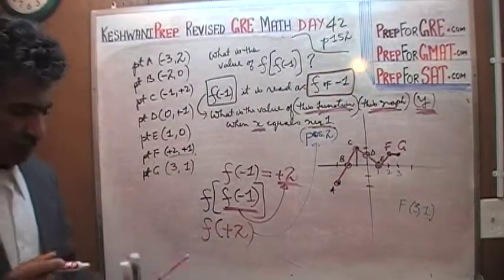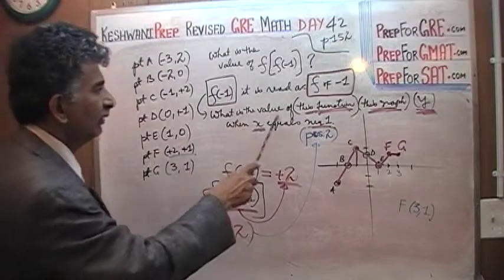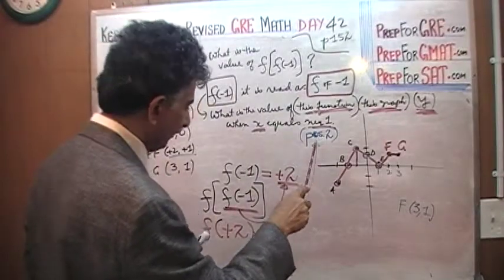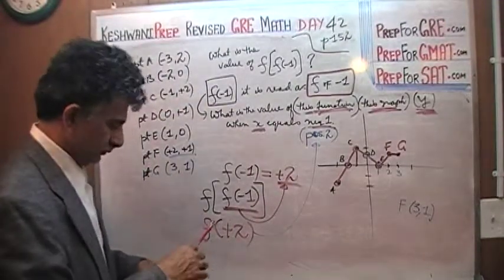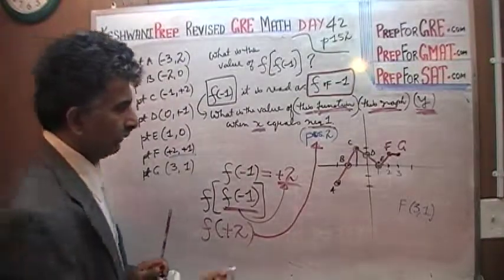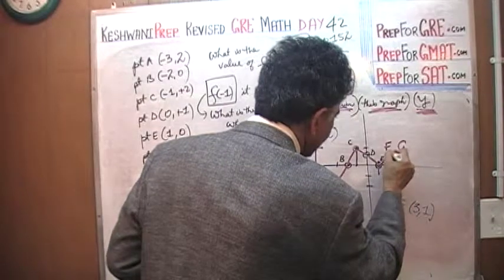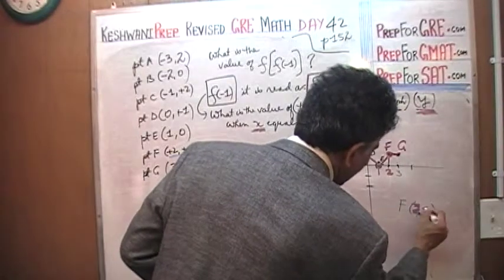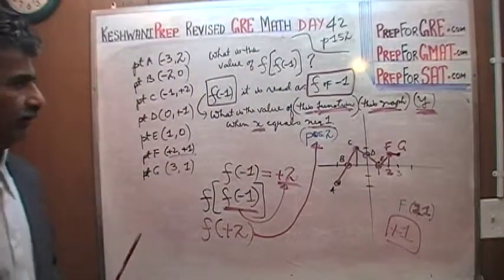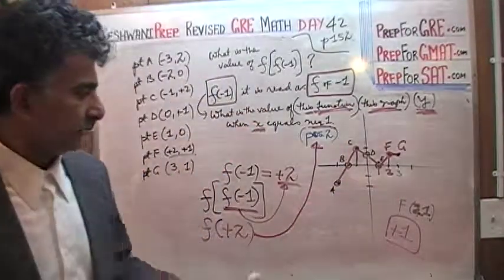So now the final question is: what is the value of the function when x equals positive 2? When x equals positive 2 — right here is 1, 2 — the value of y is 1. We are talking about point F. When x is 2, y is 1. That is your final answer — the value of the function when x equals positive 2 is positive 1.